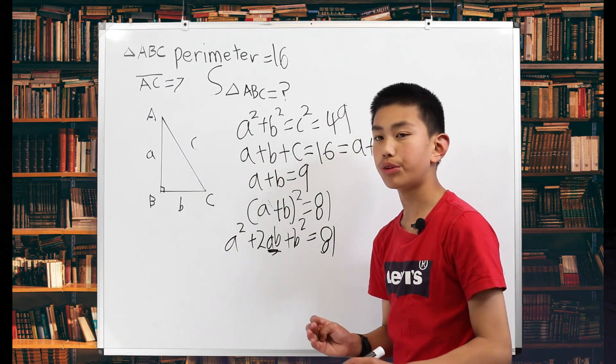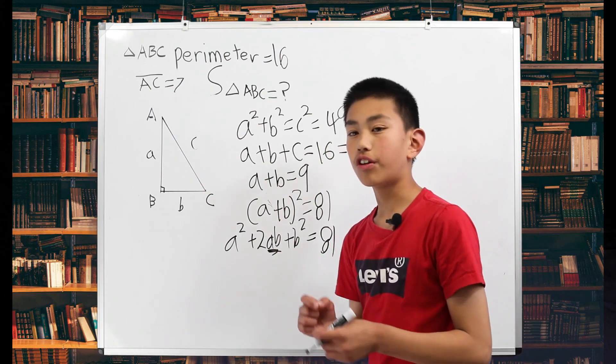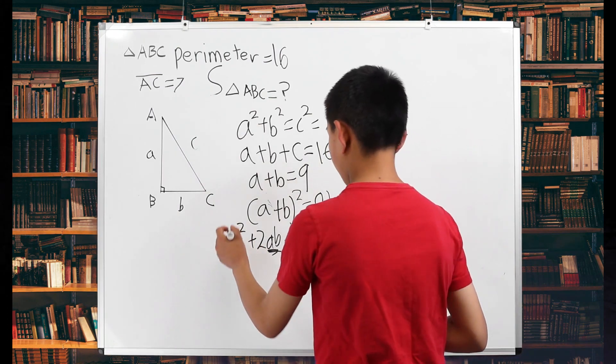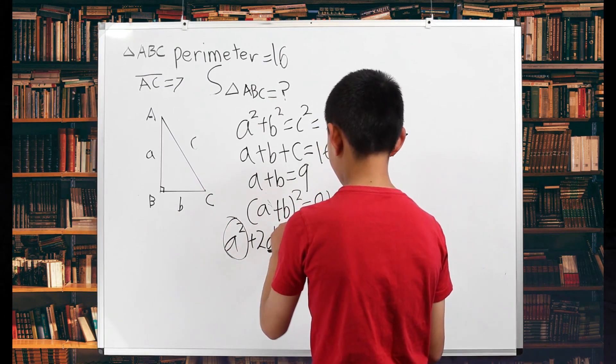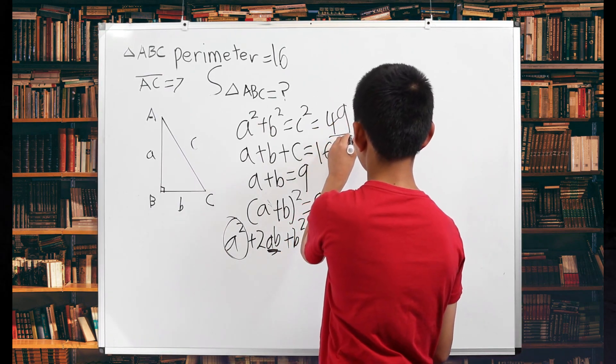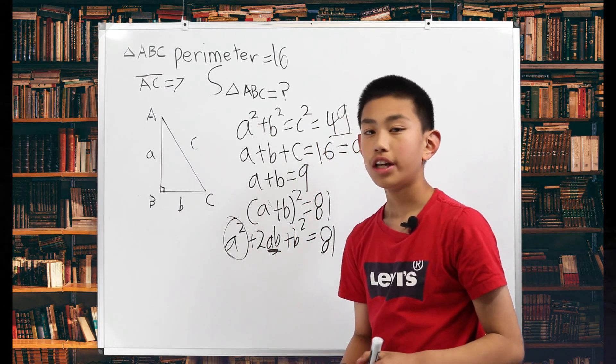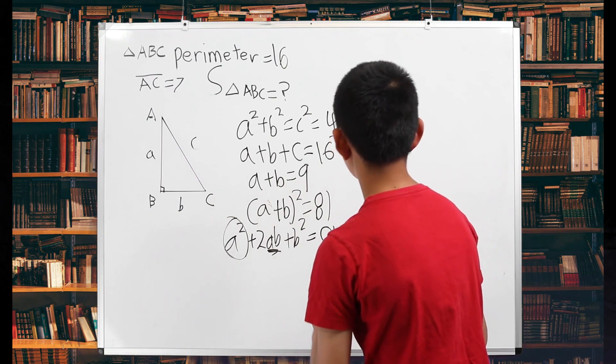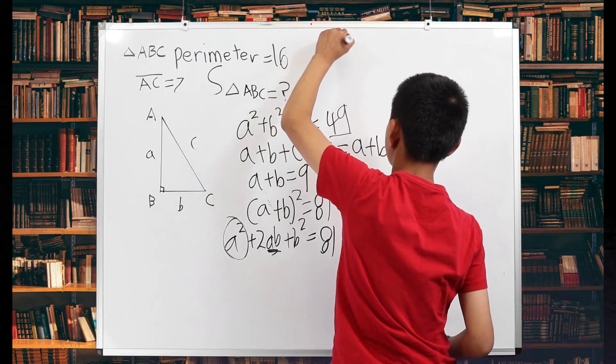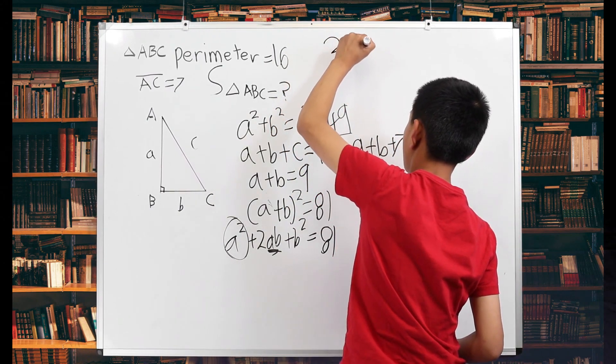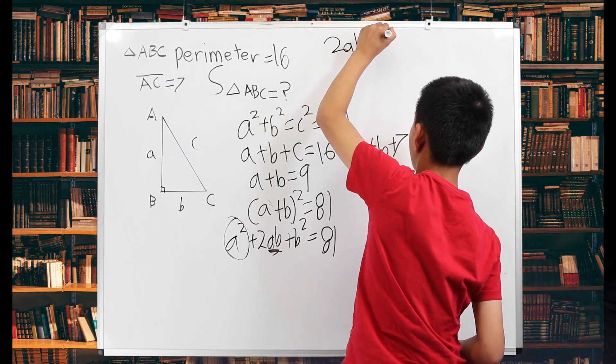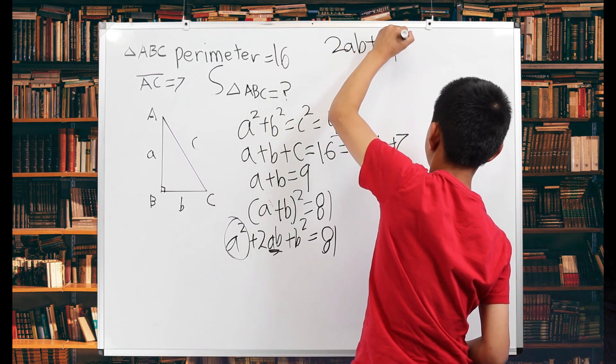And what we've also noticed is that since they're all adding, and A squared plus B squared is 49, instead of this we can write it as 2AB plus 49 is equal to 81.